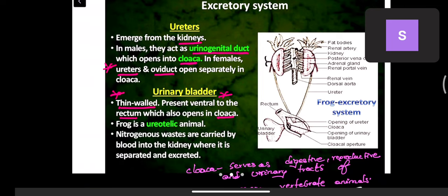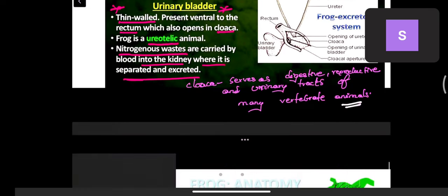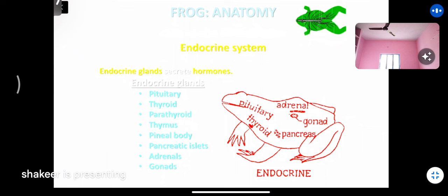Frogs are ureotelic animals — they release urea as nitrogenous waste. This nitrogenous waste is carried by blood into the kidney, where it is separated and excreted through ureters, urinary bladder, and finally the cloaca.